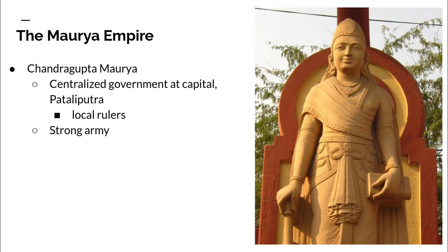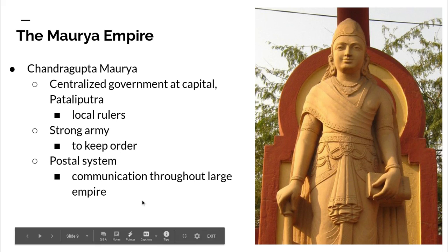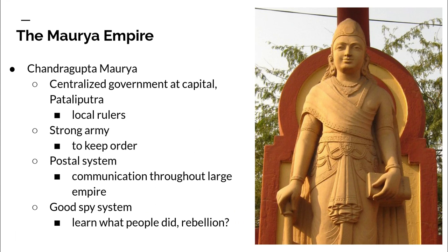Chandragupta also had a strong army to keep order throughout his expanded empire. He created a postal system to improve communication across the large empire, especially between local rulers and the capital. And he also had a good spy system to learn what people were doing — that was his way of figuring out if a group was trying to rebel against his rule. So: a centralized government, a strong army, a postal system, and a spy system.